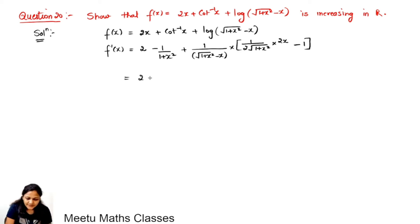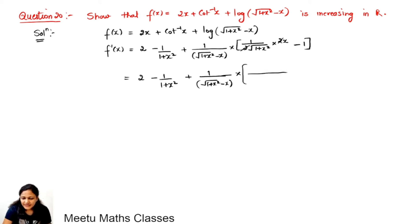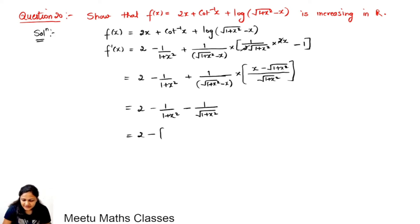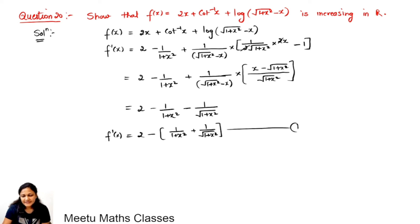So this will be equal to 2 − 1/(1+x²) + 1/(√(1+x²) − x) multiplied by the numerator — the 2 will cancel out. Taking LCM of √(1+x²), it will become x − √(1+x²). Taking the negative sign common, this factor cancels out and you are left with 1/√(1+x²). So f'(x) = 2 − 1/(1+x²) + 1/√(1+x²). Let us take this as your first derivative.